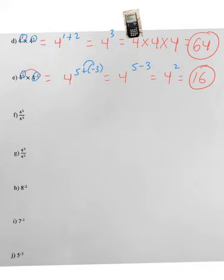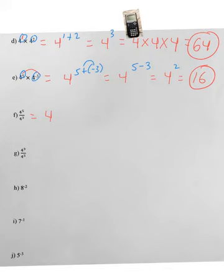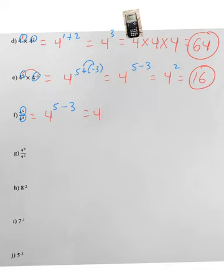Part f: we're dividing — the fraction bar means division, so this is the quotient rule. Dividing the same base means subtract the exponents. Keep the base of 4; the exponent on top is 5 minus the exponent on the bottom, which is 3. So 5 minus 3 equals 2, giving 4 squared, which is 16 as the final answer.